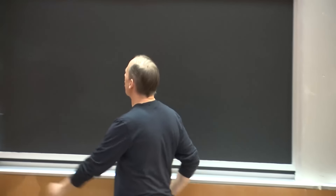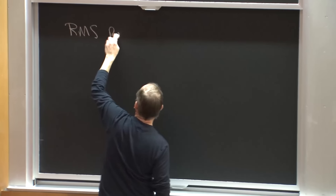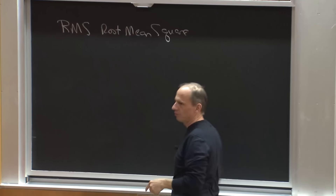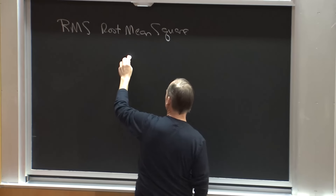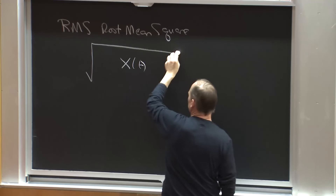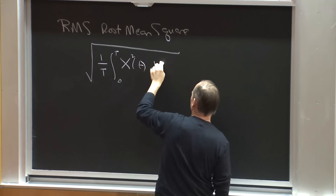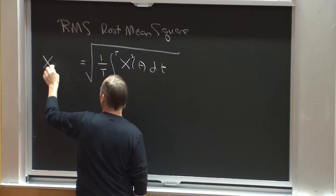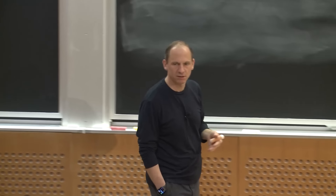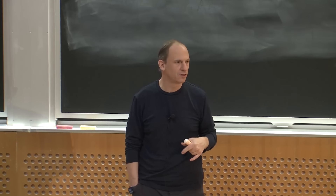The first definition is simply the RMS, or the root mean square of the signal. If I have a signal x of t, the root mean square is the square root of the mean of x squared of t, and I'd call that x_RMS. There are a variety of reasons why you might want to calculate the RMS of a signal, but it's particularly useful in thinking about energy.